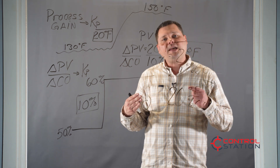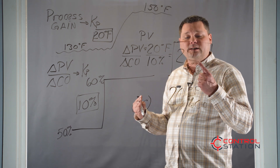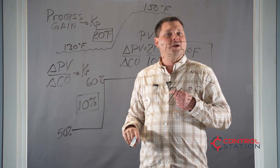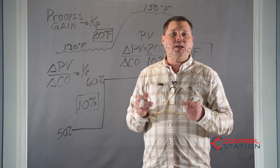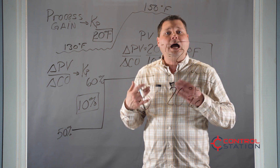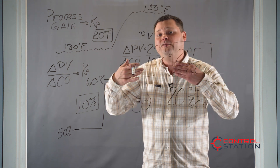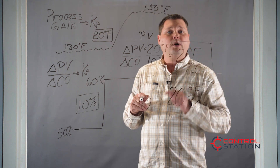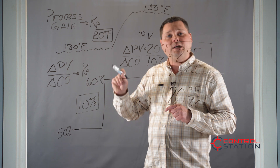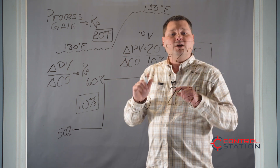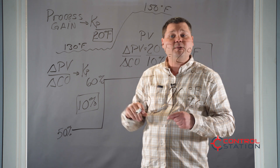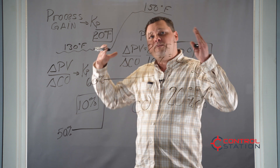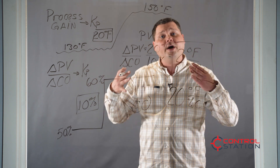Think about this: if I can move a valve accurately only 1 percent, the best control I'm going to get is probably 2 degrees Fahrenheit. So if I needed to accurately manipulate the temperature to 0.2 degrees, I would have to accurately move the valve 0.1 percent. If I cannot accurately move the valve 0.1 percent, I'm not going to achieve that 0.2 degree control. It helps us understand the controllability and sensitivity of the system, and all those things we can use to refine our control objective and understand what is possible.